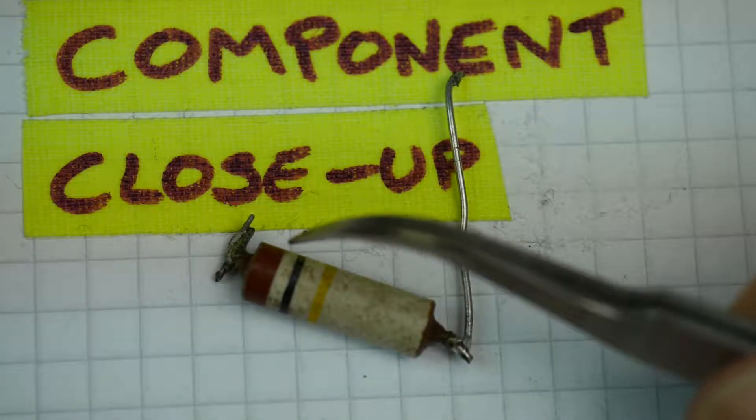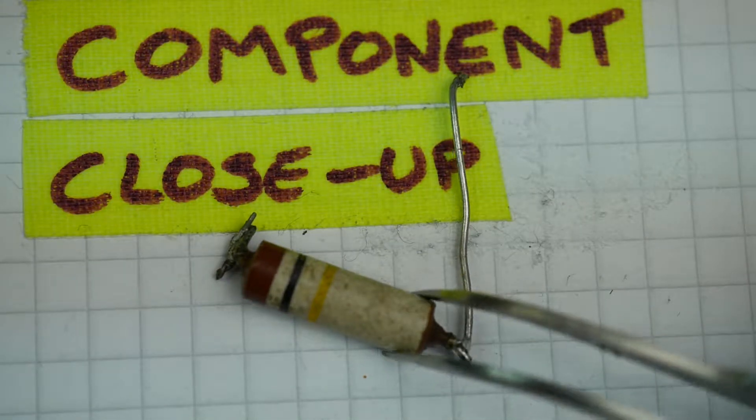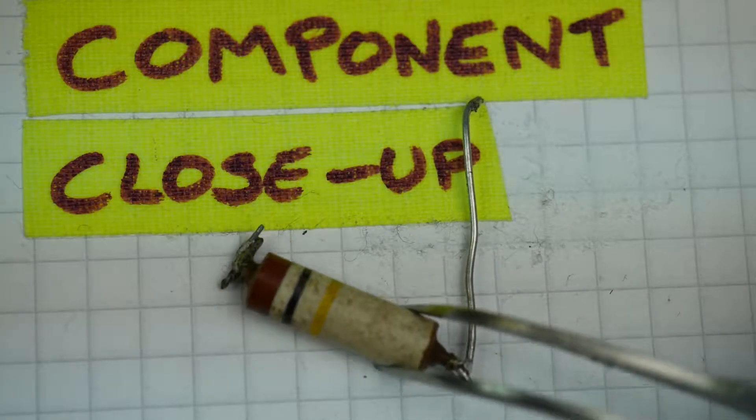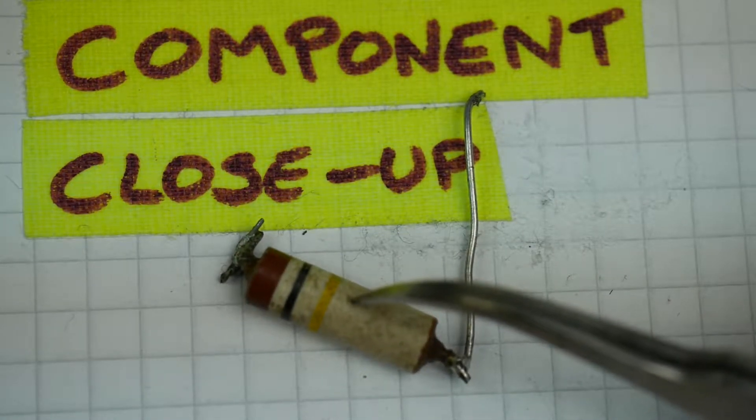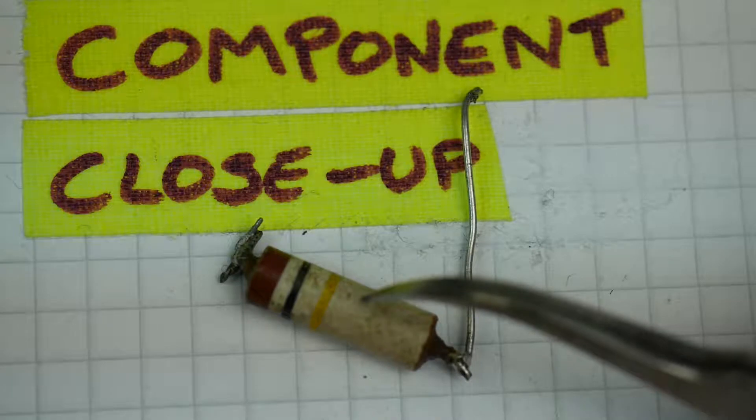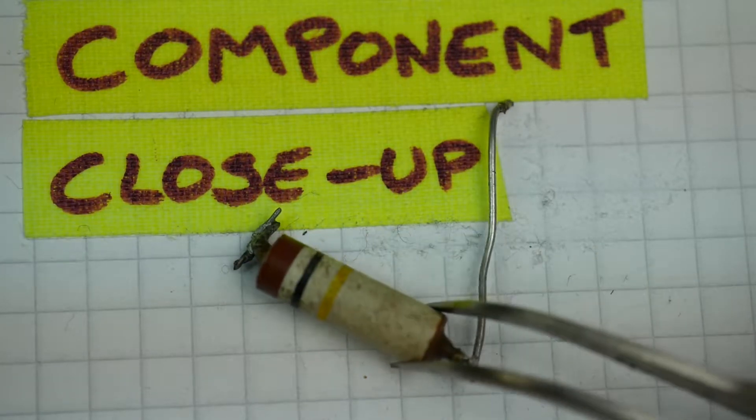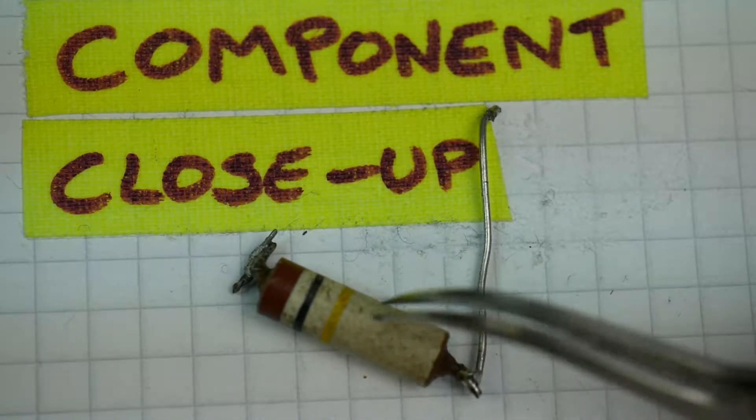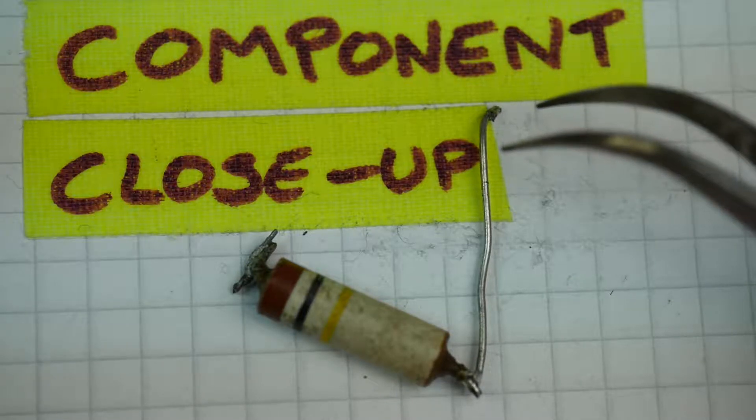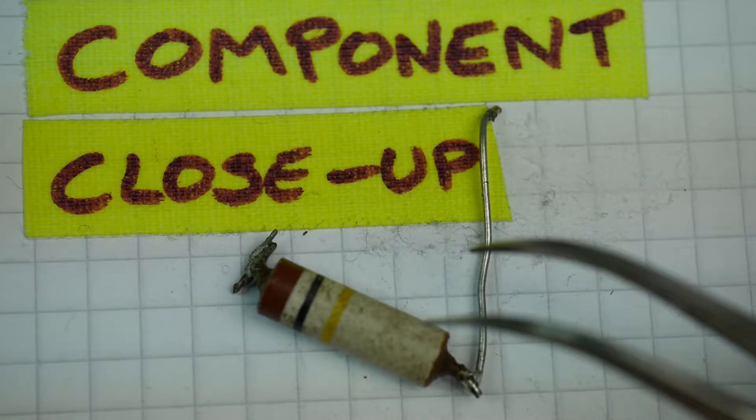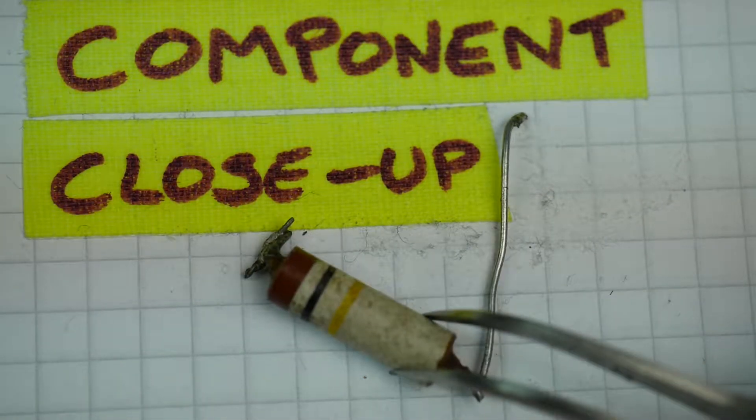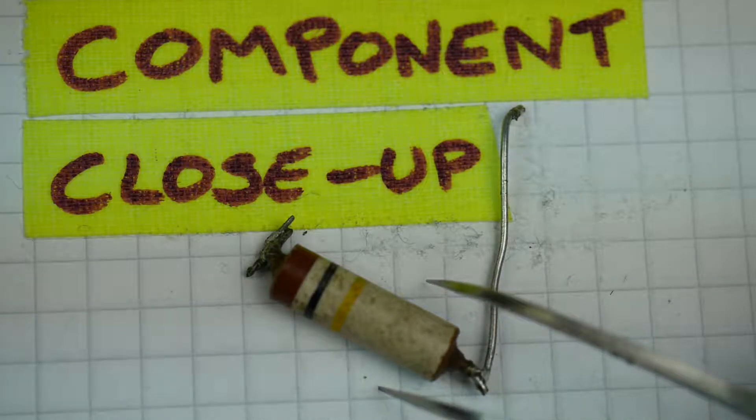This particular one is brown, black, yellow 100k. It's missing its tolerance band. There isn't a gold band on this one to say what the tolerance is. That's because it's 20% tolerance and the absence of the tolerance band means 20%. So that's the sort of cheapest model in the range.